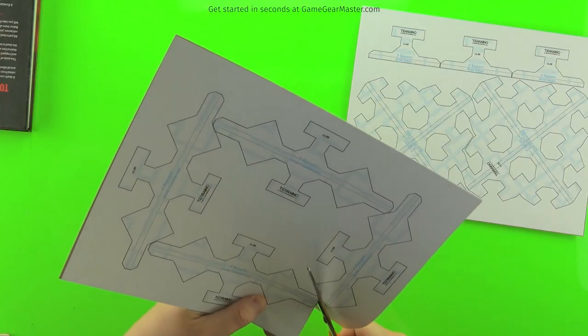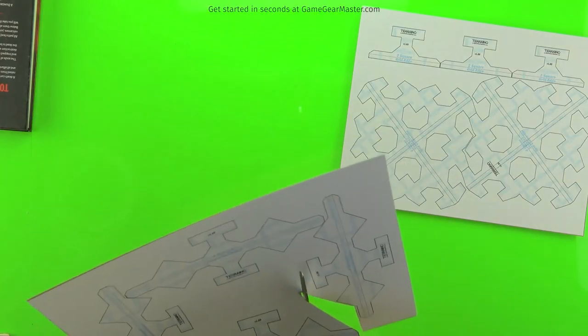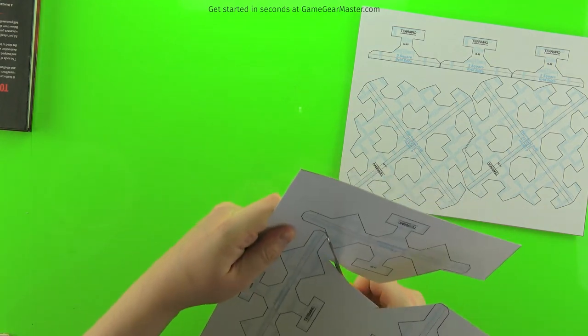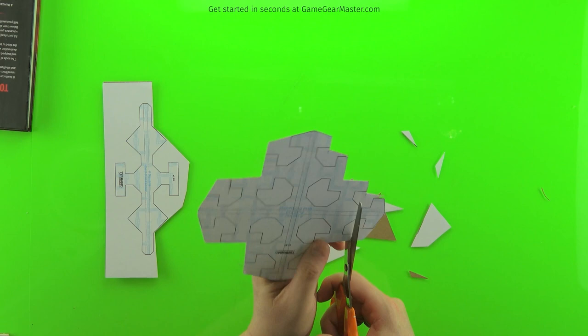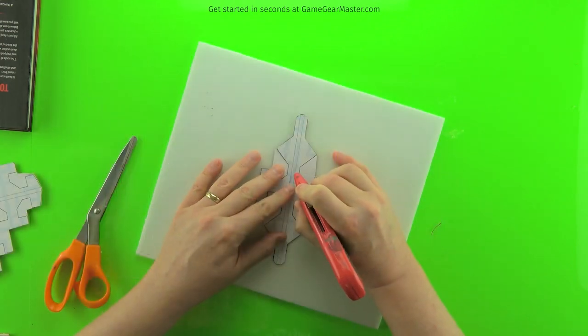And once they're dried on there, I'm just going to cut them out with scissors. And we'll take and cut out the more complex areas, the part that'd be hard to do with scissors, with the utility knife with the connector laying on top of a piece of foam board.